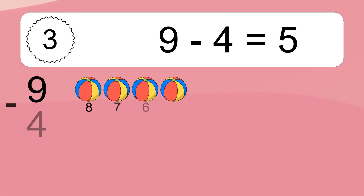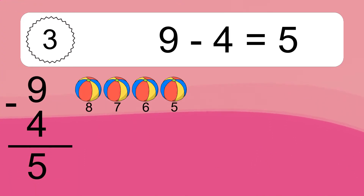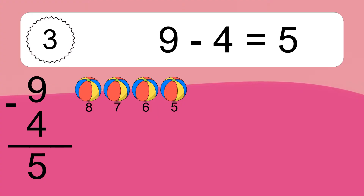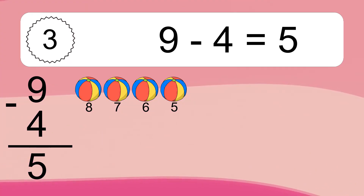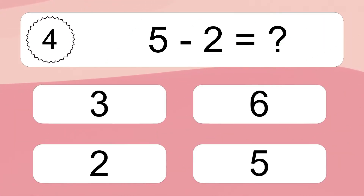9 minus 4 equals what? 9 minus 4 equals 5. Let's count it: 8, 7, 6, 5.